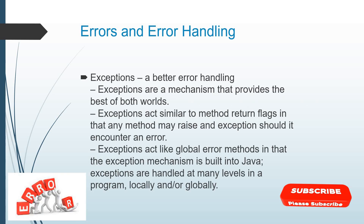Exceptions are better error handling. Exceptions are the mechanism that provides the best of both worlds. Exceptions act similar to method return flags — any method may raise an exception should it encounter an error. Exceptions act like a global error method in that the exception mechanism is built into Java. Exceptions are handled at many levels in a program, locally or globally.